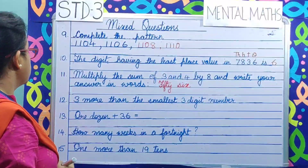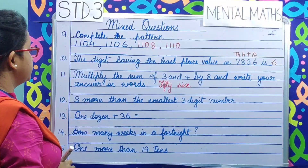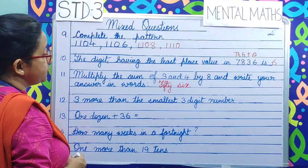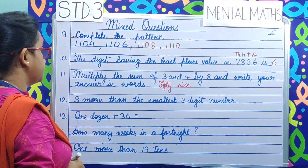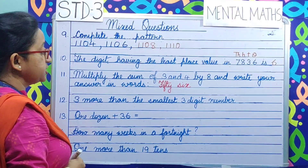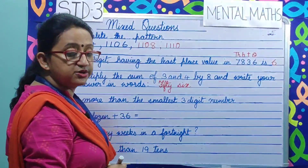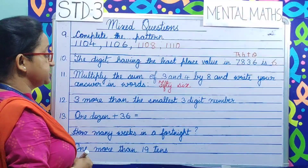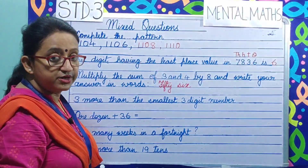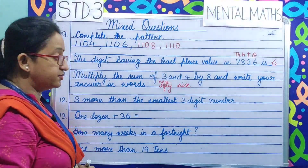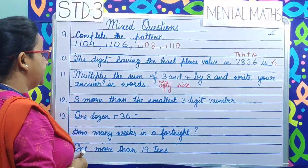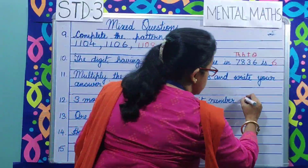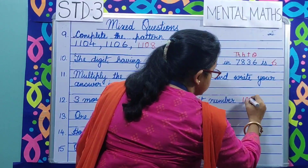Question number 12. 3 more than the smallest 3-digit number. The smallest 3-digit number is 100, so 100 plus 3 makes it 103.